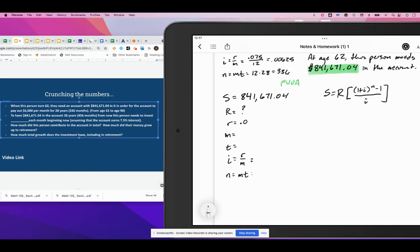We're going to assume the interest rate of 7.5%. It's going to be monthly, and it's going to be for 38 years because they're 24 now. They're going to retire at age 62. So our 0.075 over 12 is going to be the same as it was in the previous one, 0.00625. And MT is going to be 12 times 38, which is going to be 456.